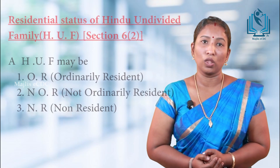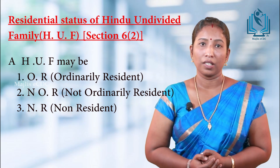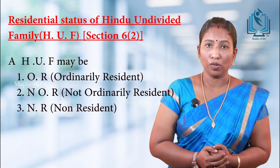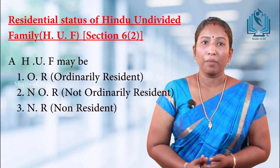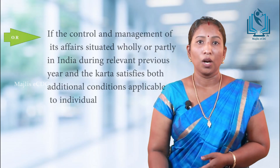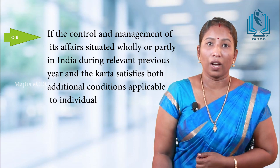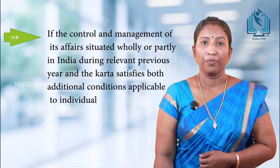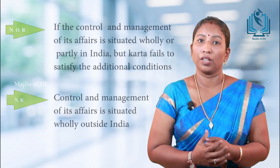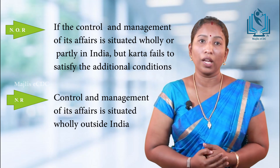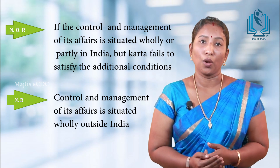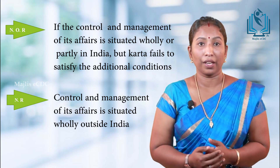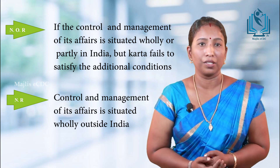Next, the residency status of a Hindu undivided family (HUF) is defined under section 6, subsection 2 of Income Tax Act 1961. Like an individual, the HUF is divided into ordinarily resident, not ordinarily resident, and non-resident. If the control and management of its affairs is situated wholly or partly in India and the Kartha — the head of the HUF — satisfies both additional conditions applicable to an individual, then the HUF is ordinarily resident. If the Kartha fails to satisfy the additional conditions, the HUF becomes not ordinarily resident. If control and management is situated wholly outside India, the HUF is non-resident.